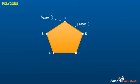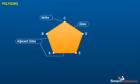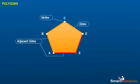Any two sides with a common end point are called the adjacent sides of the polygon. The pairs of adjacent sides are: AB and BC, BC and CD, CD and DE, DE and EA, EA and AB.